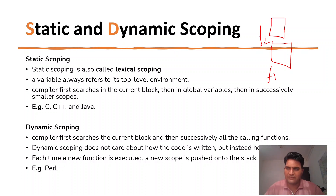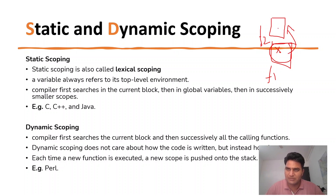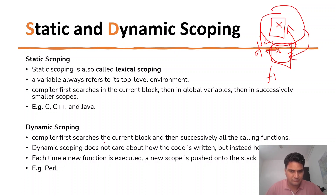If we call F1 from F2, and there is a variable used in F1, then the compiler first looks in the current block. If it is not found in the current block, it goes to the calling function. So in dynamic scoping, after searching the current block, it successively goes to all the calling functions.